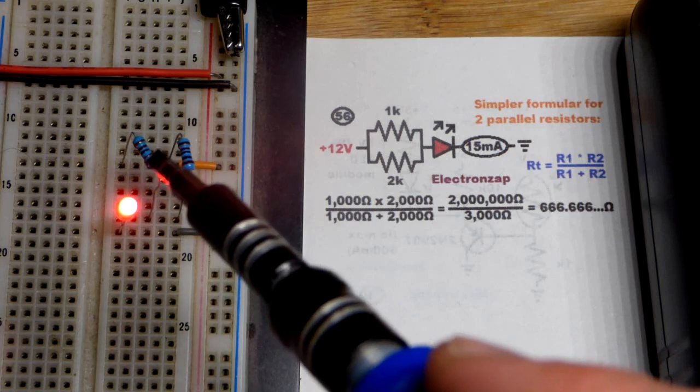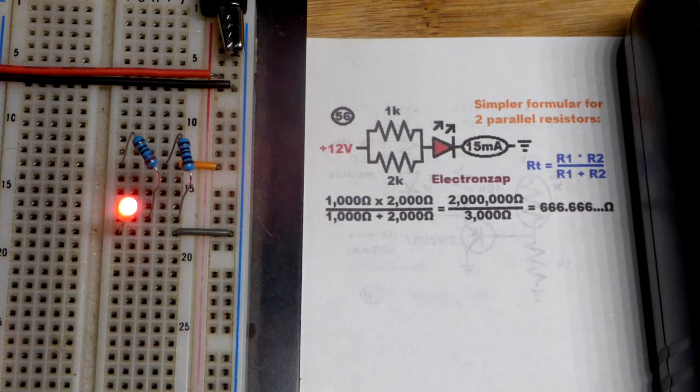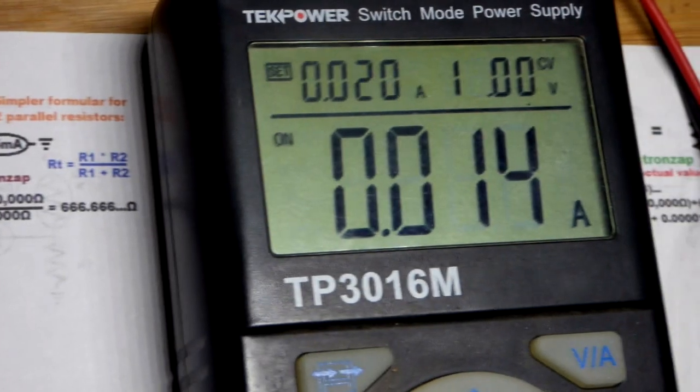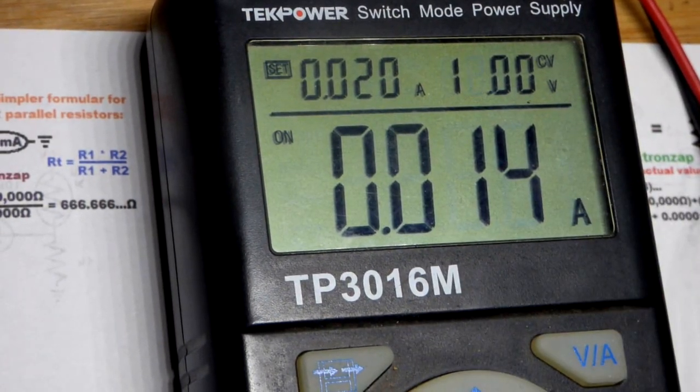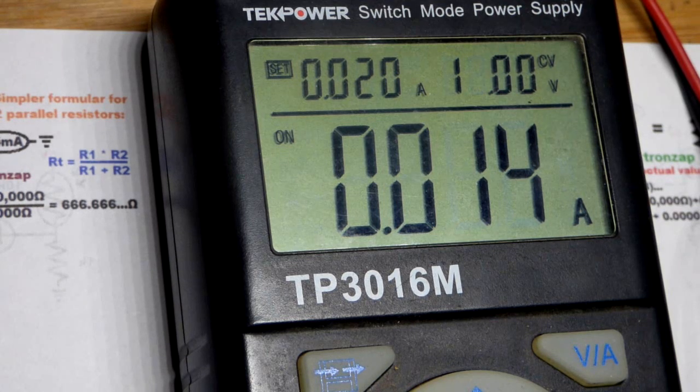This is a 2,200 ohm resistor though, not a 2,000. So we're going to get slightly less current. There you can see the power supply says 14 milliamps of current. It is a little bit below 15. So that lines up pretty good.